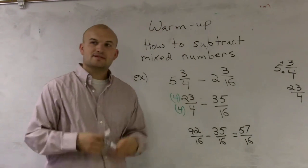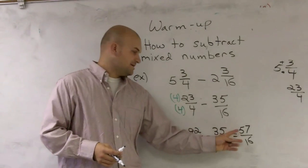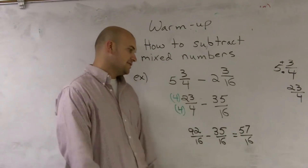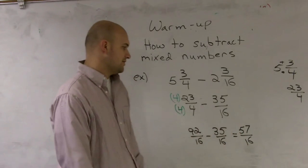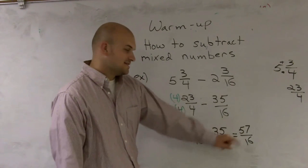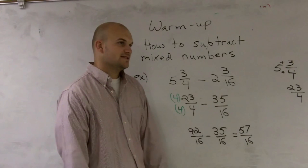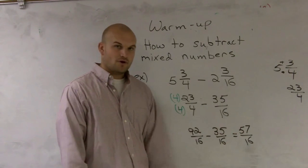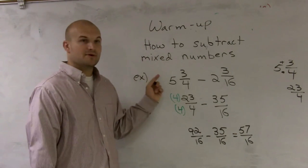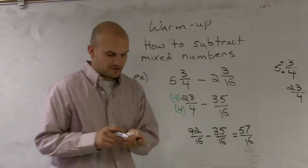My last step is to check if I can simplify — is there any number that goes into both 57 and 16? Looking at the factors of 16, none of them go into 57. Therefore, 57 over 16 is simplified. That is how you subtract mixed numbers when you convert both to improper fractions.